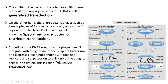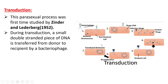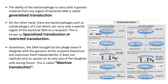In transduction there are two types: generalized and specialized transduction. In generalized transduction, the bacteriophage has the ability to carry genetic material from any region of the bacterial DNA. The phage DNA comes, attaches to the bacterial cell, and the chromosome DNA of the phage integrates into the bacterial DNA.